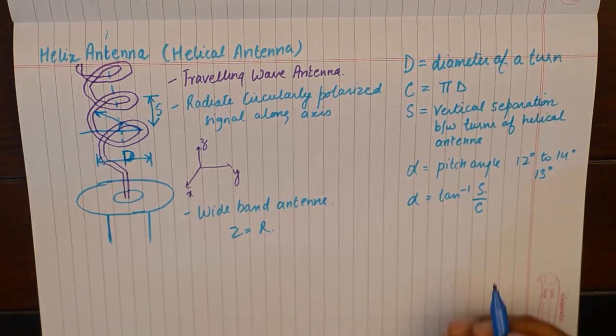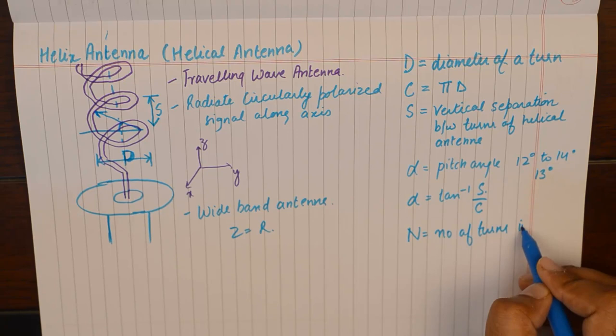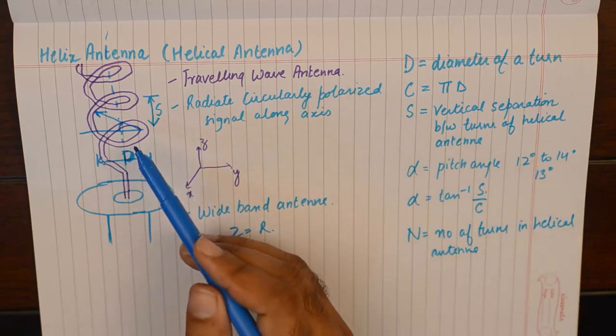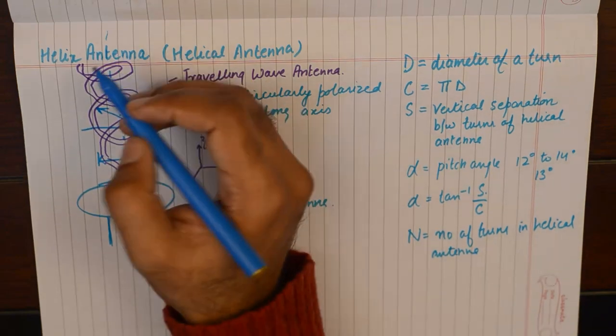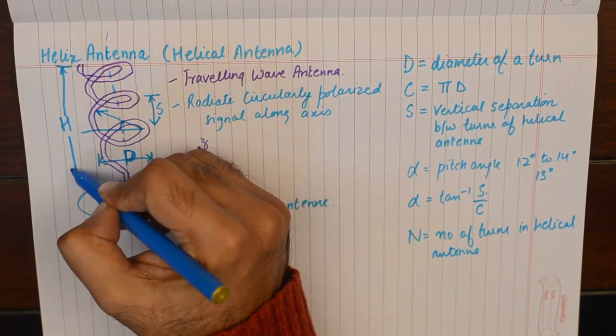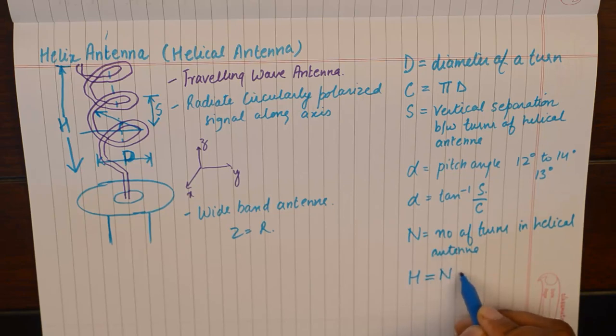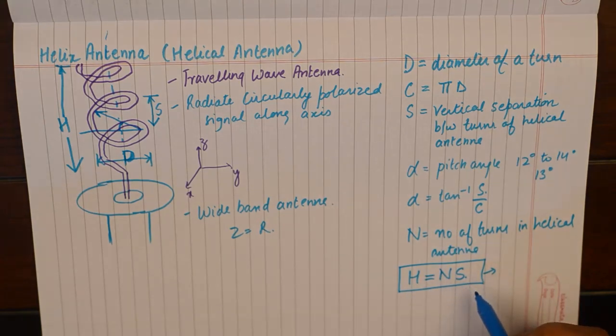Then we have the number of turns in helical antenna. For this particular helical antenna that I have drawn, we just have three turns, and the total height can be denoted as H. H can be calculated as the number of turns into the separation between two consecutive turns. So this is a pretty simple formula to calculate the total height of the helical antenna, which is the number of turns into the separation between two turns.